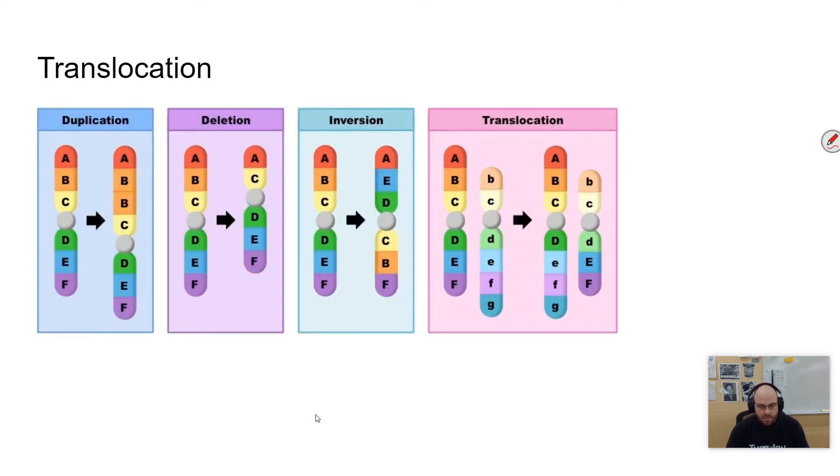And then finally, it's translocation, and this has to do with chromosomes specifically. You can see the different examples here. Essentially what's going on, this is when portions of a chromosome are changed. So this is showing maybe three sections of a chromosome, and one of those sections becomes duplicated.